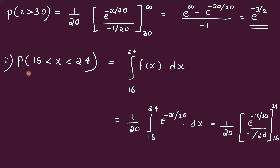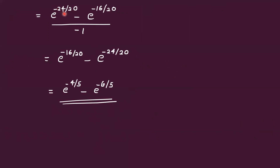For the probability that repair time is between 16 and 24 hours: P(16 < X < 24) = integral from 16 to 24 of f(x) dx = (1/20) * integral from 16 to 24 of e^(-x/20) dx. Integrating gives e^(-x/20) divided by (-1/20), evaluated from 16 to 24. Applying limits: e^(-24/20) minus e^(-16/20) divided by minus 1, which equals e^(-4/5) minus e^(-6/5).